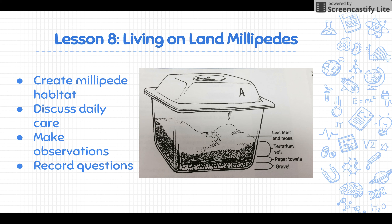This leaf litter — like old leaves, twigs, and rocks — is very important in the habitat. After they create the habitat and introduce the millipedes, they'll discuss the daily care, which is very easy for millipedes: make sure to spray the habitat and keep it moist, and maybe add a slice of apple or two every couple of weeks.